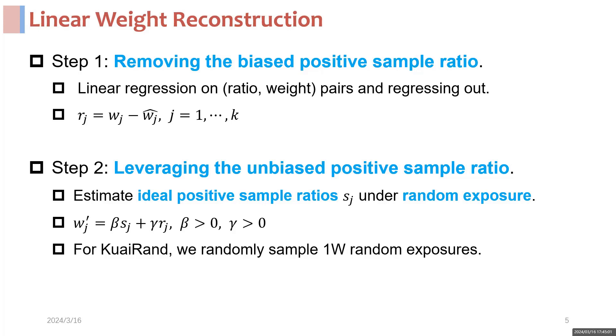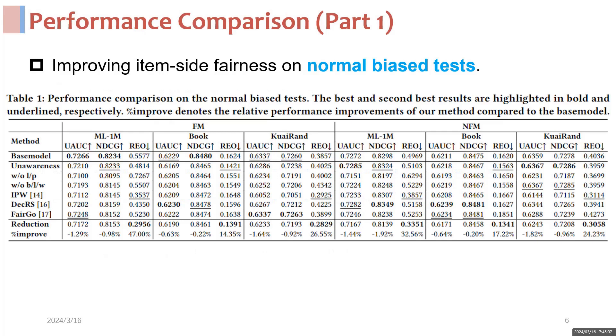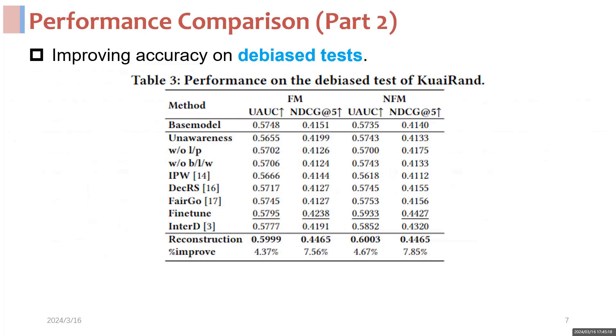In experiments, on normal biased tests, our linear weight reduction method remarkably reduces REO-L5 with little sacrifice of accuracy, showing its effectiveness in alleviating the feature-level bias.